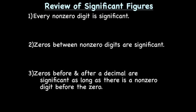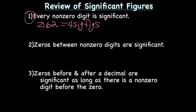We'll start with a real quick review of significant figures. First thing we need to know about significant figures is that every non-zero digit is significant. So if I had a number like 2162, there are four sig figs there. If I had a number like 8.691, there are again four sig figs. Every non-zero digit is significant.